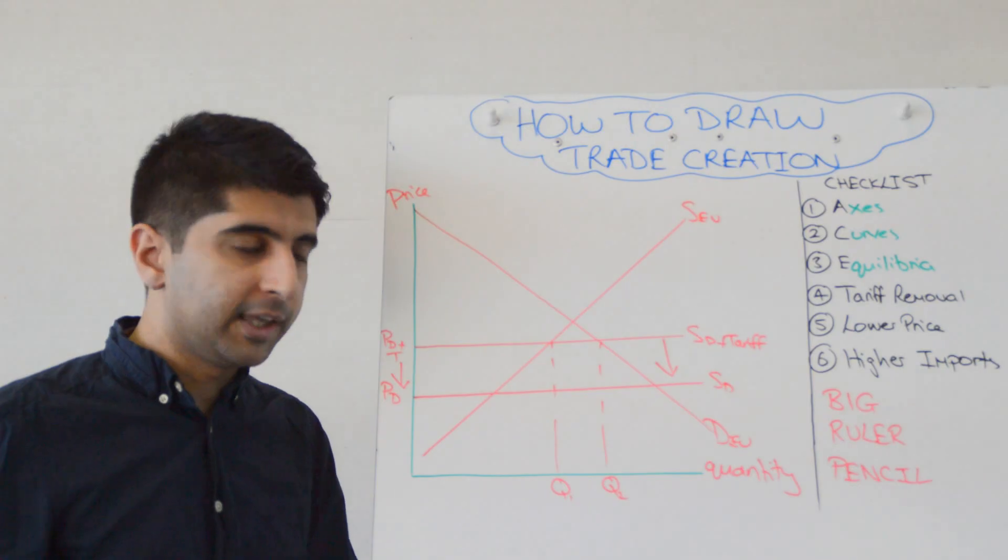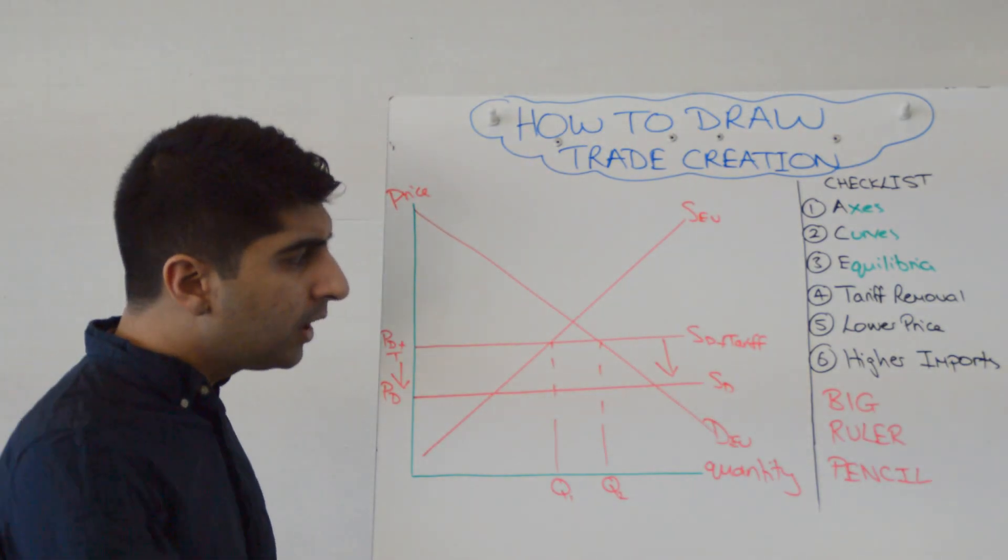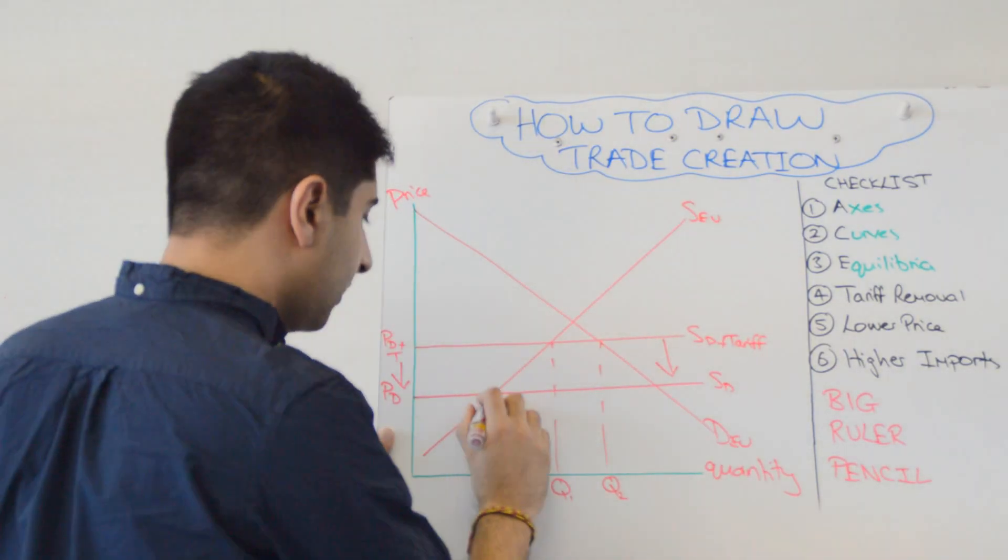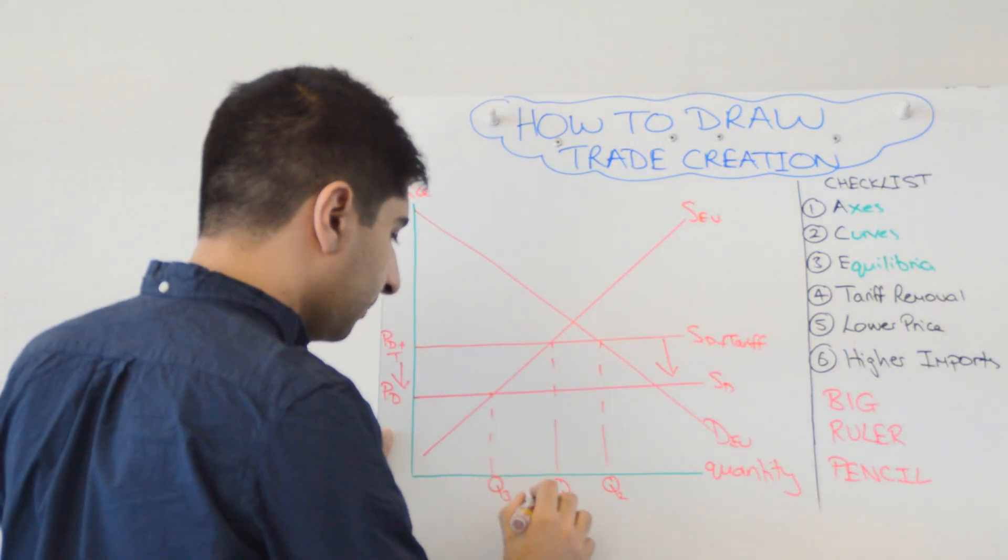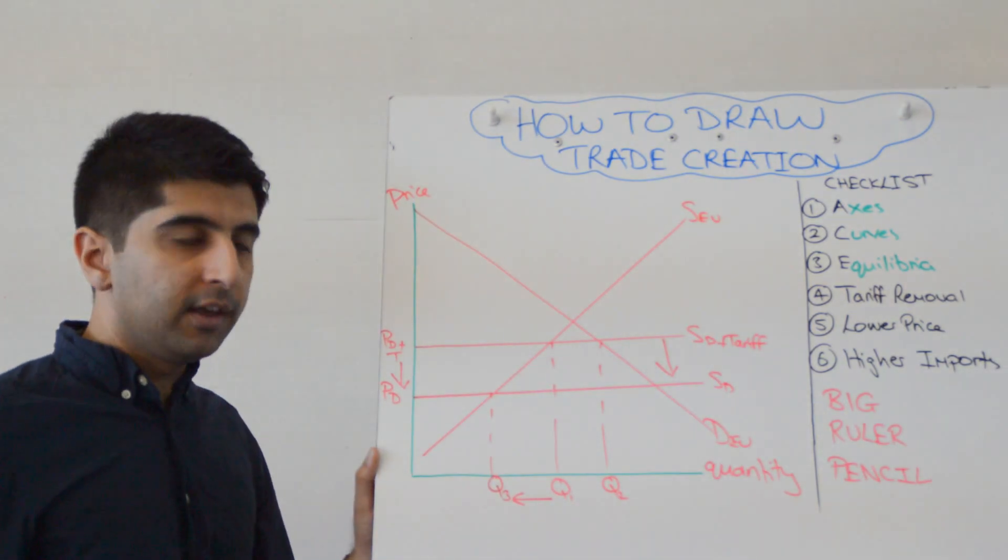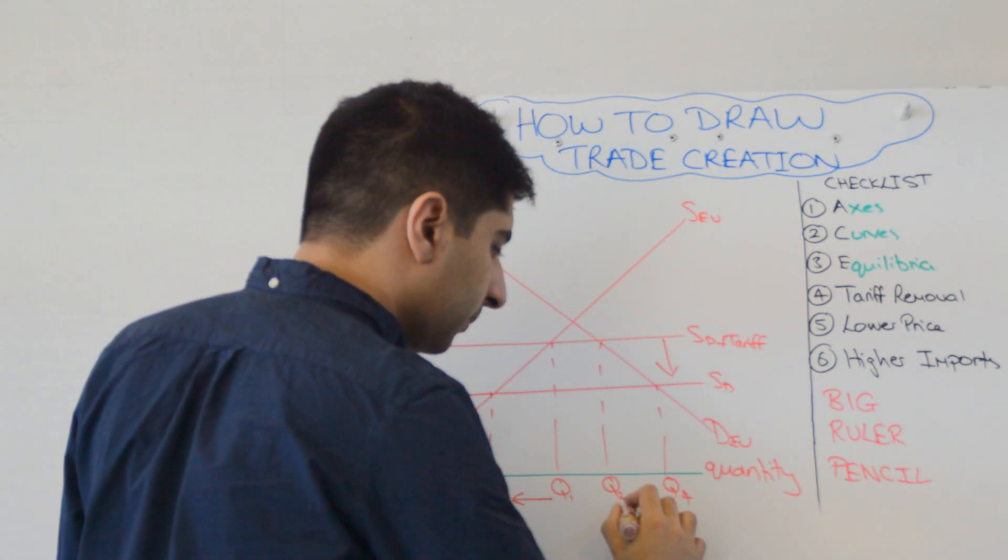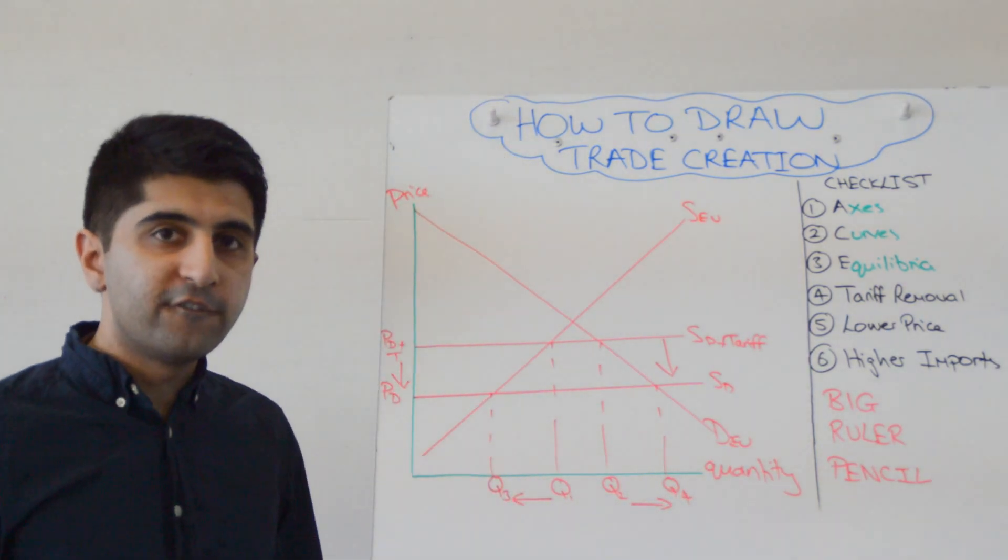You put the arrows on to make it clear what you're doing. What now happens? Well, with this lower price in the market, EU supply has contracted from Q1 to Q3, and EU demand has extended from Q2 to Q4.